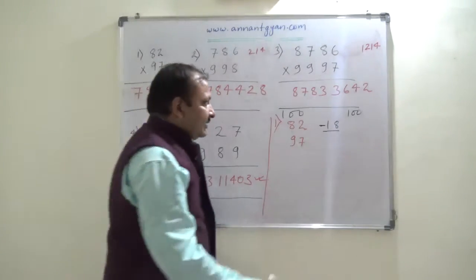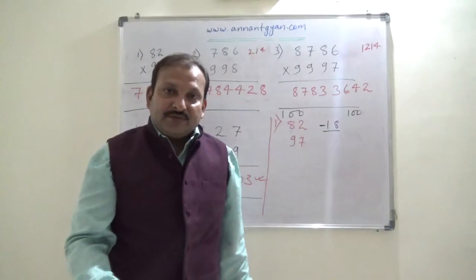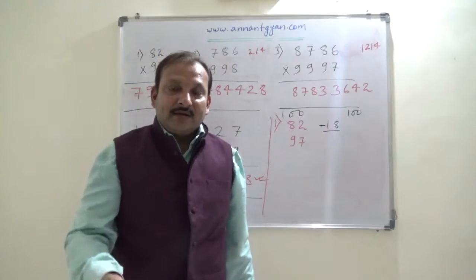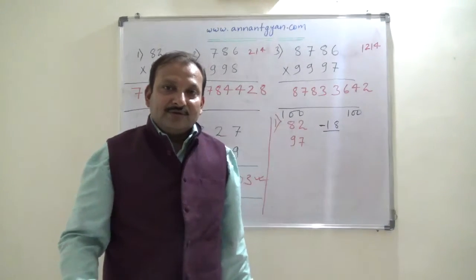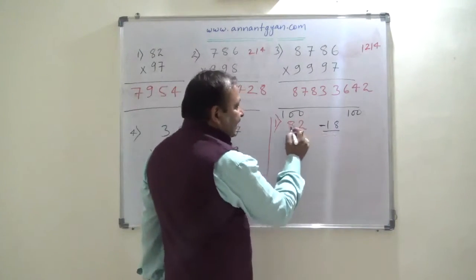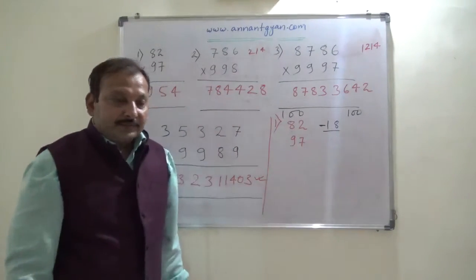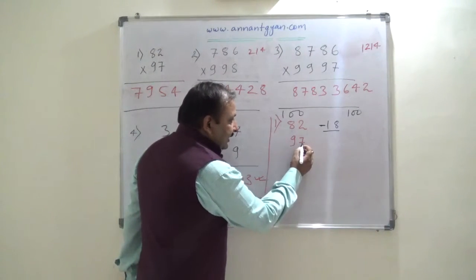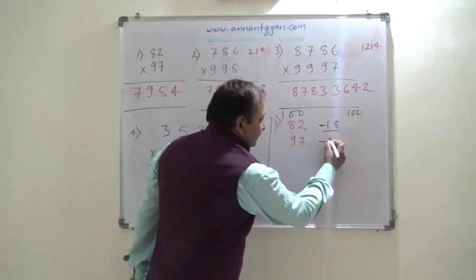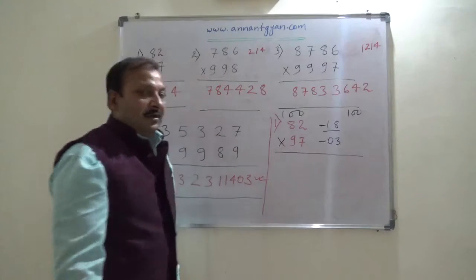10 minus 2 is 8, and 9 minus 8 is 1, so 82 is 18 less than 100. That's why I shall write minus 18. If a number is more than the base value — for example, if it is 4 more than 100 — I shall write plus 4. But here the number is 18 less than 100, so I write minus 18. Also, 97 is 3 less than 100, so we write minus 03.